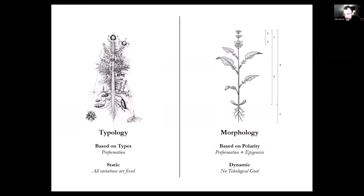Morphology is a dynamic principle of form based on polarity — it combines pre-formation and epigenesis and tackles the fixed notion of typology. Typology in biology is a prescribed type: all maple leaves, all dog species have a specific appearance. But we cannot fixate it to a single form because there are topological variations and many traits. Typology becomes restrictive because it excludes dynamic variation. Morphology tries to expand on that.